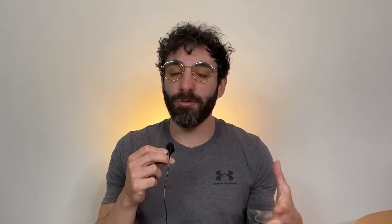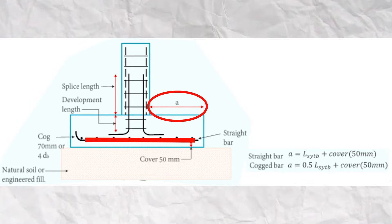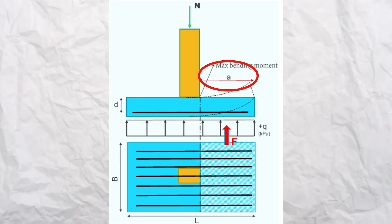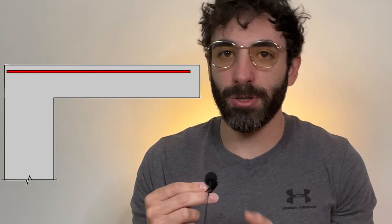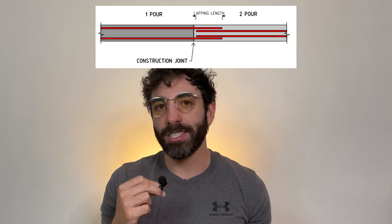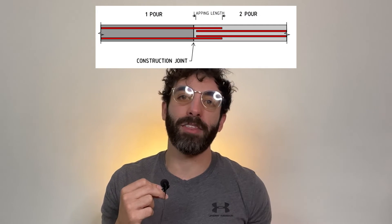Another case that engineers often miss is the development length of the footing reinforcement. We typically design the footing as a cantilever beam in bending from a distance to the face of the column, so we need a footing size large enough to achieve full development length. This leads to our next example — a simple cantilever beam. We must develop the bars into the support and also into the cantilever direction. Another good example is joints in concrete slabs, where you must make sure the development and lapping length is sufficient.